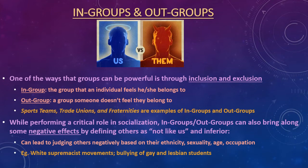However, in-groups and out-groups can also bring along a lot of negative effects if things go too far and out-groups become defined as others, unlike us, or inferior. This can lead to judging others negatively based on ethnicity, sexuality, age, or occupation. For example, white supremacist movements and the bullying of gay and lesbian students in schools take that in-group/out-group function to a quite negative conclusion.